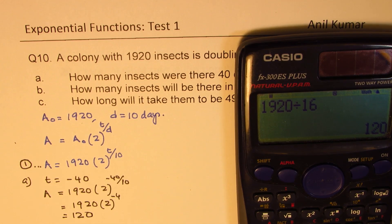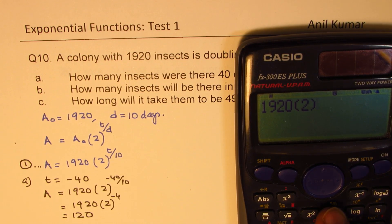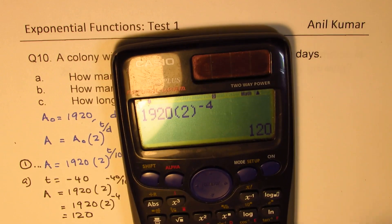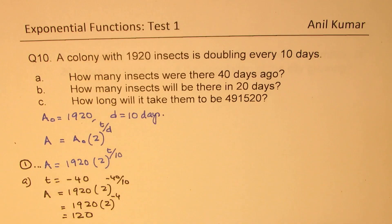You could also calculate it directly as 1920 times 2 to the power of minus 4, which also gives you 120 — the same answer. That is how you find the answer for part A.